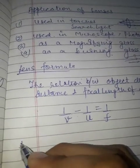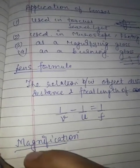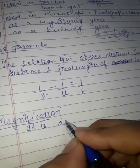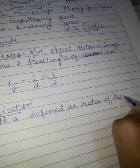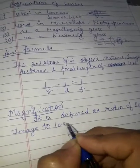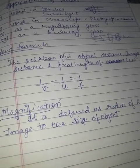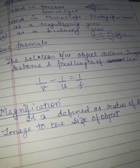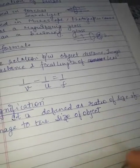Next we will read the formula of magnification. In mirrors we also had a magnification formula. Magnification is defined as the ratio of the size of the image to the size of the object — how many times the image is larger or smaller than the object. Basically, when you find the ratio you are comparing two things.